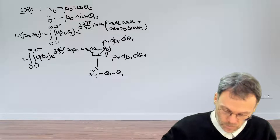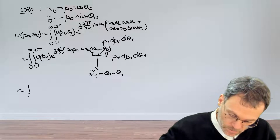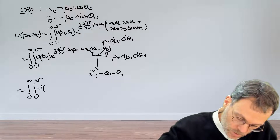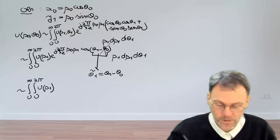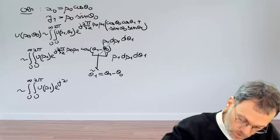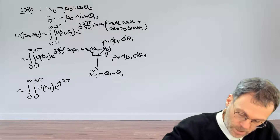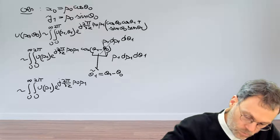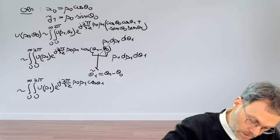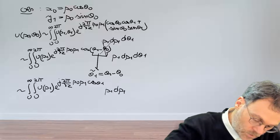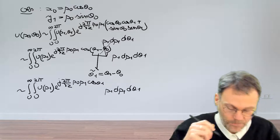Finally, we can simplify this as an integral from 0 to infinity and 0 to 2π of u(ρ₁), depending only on the radial distance, times exp(j·2π/(λz) · ρ₀ρ₁ · cos θ₁), times ρ₁ dρ₁ dθ₁.